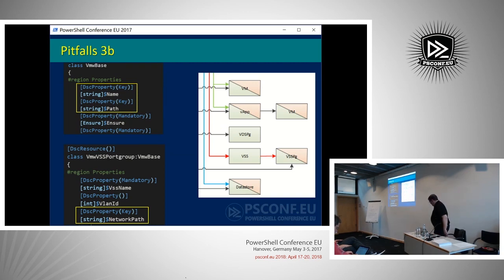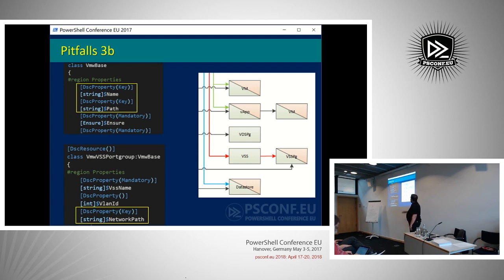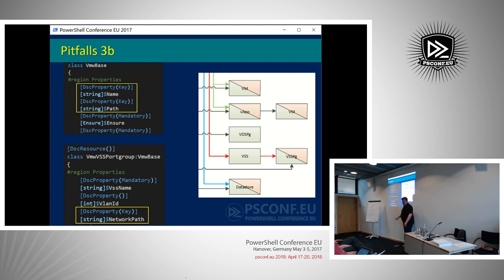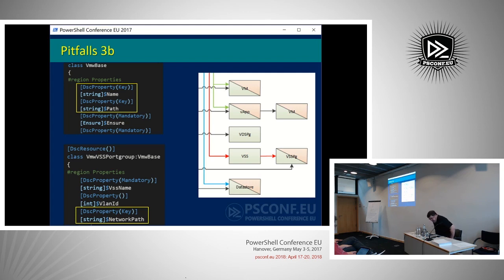This is how I implemented this in the code, and here you also see where the classes come in quite handy — this is a preview of what I'll show later with class inheritance. At the top left, it's a screenshot from VS Code. I start with a base class that has some properties all my objects in the DSC resource module share: things like the name and the path. The path is the general one, going through the host folder. But then, if you go further on — I gave an example of a standard switch based on the base class — I need to add a second path, a second property for where that virtual switch is located in the network folders. VSS is a bit different because you have to pass through an ESXi node.